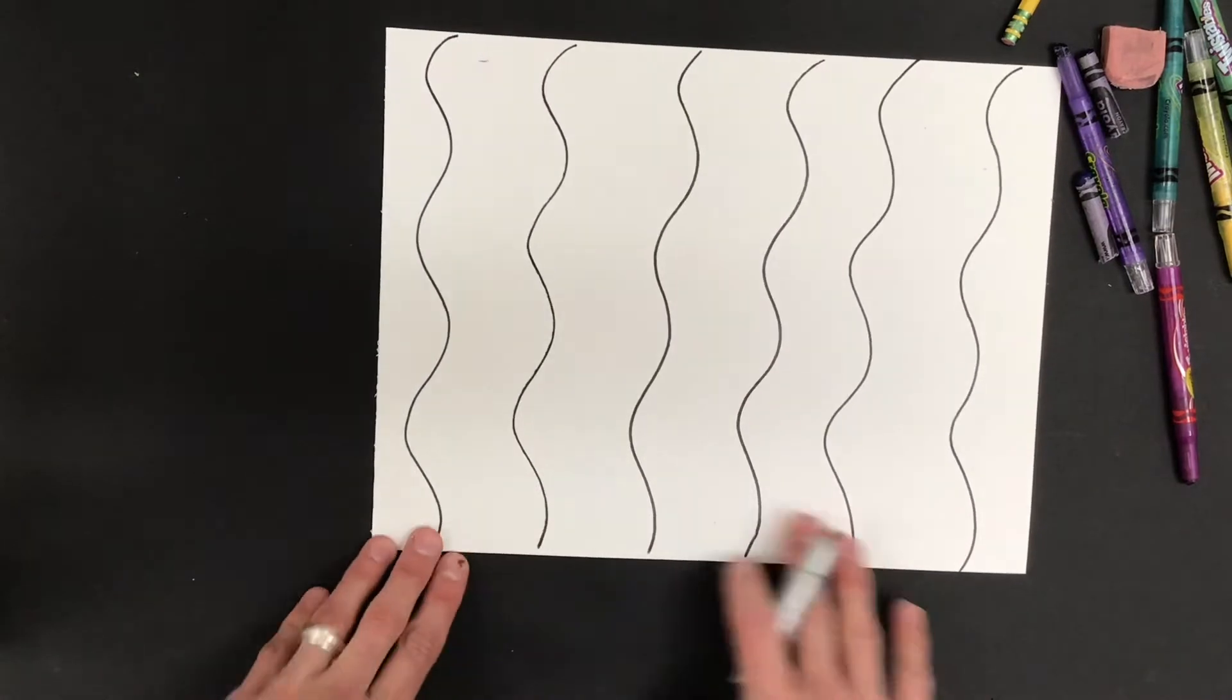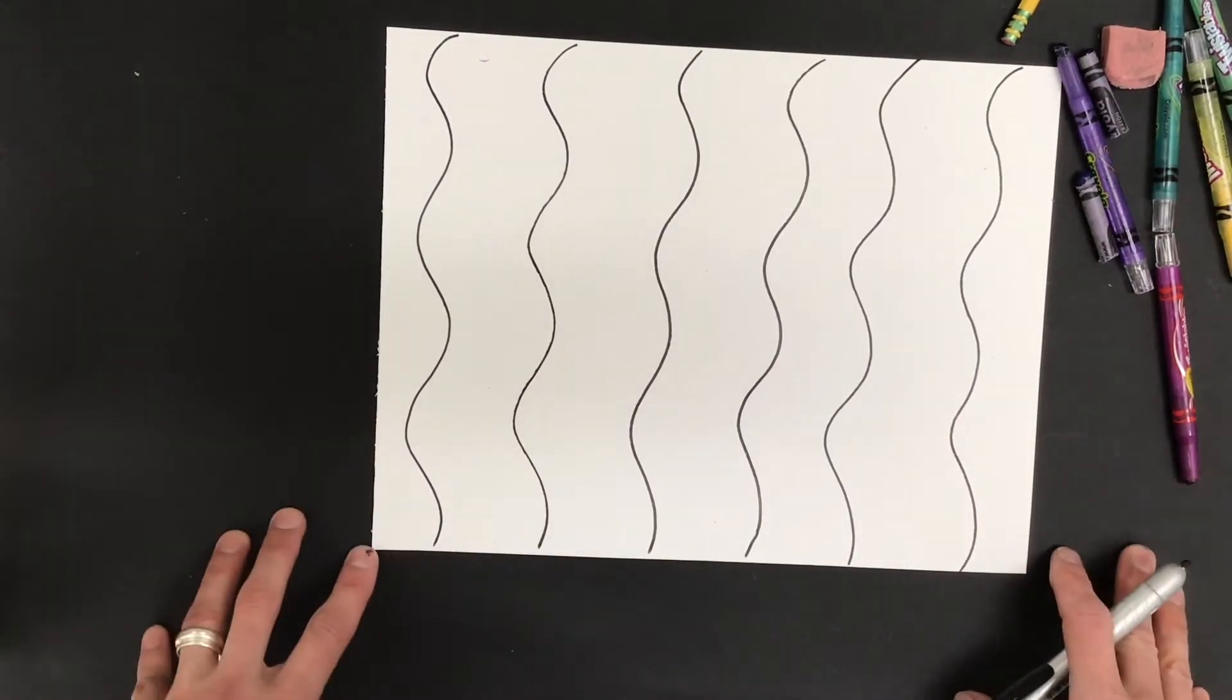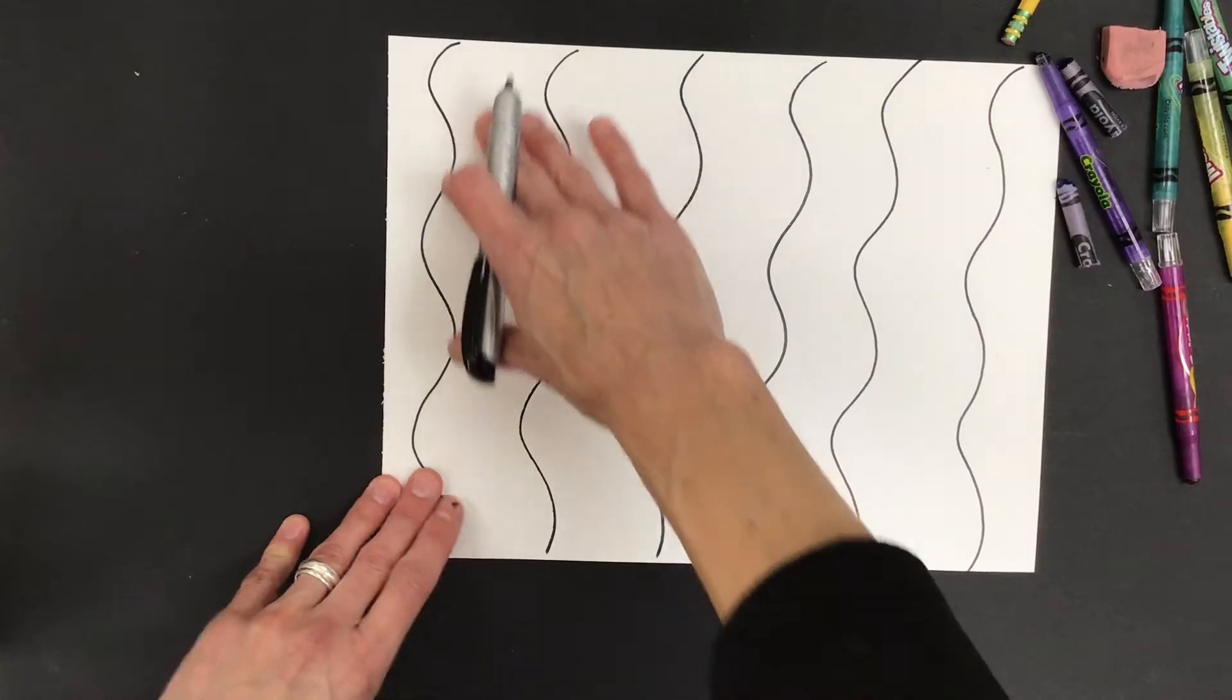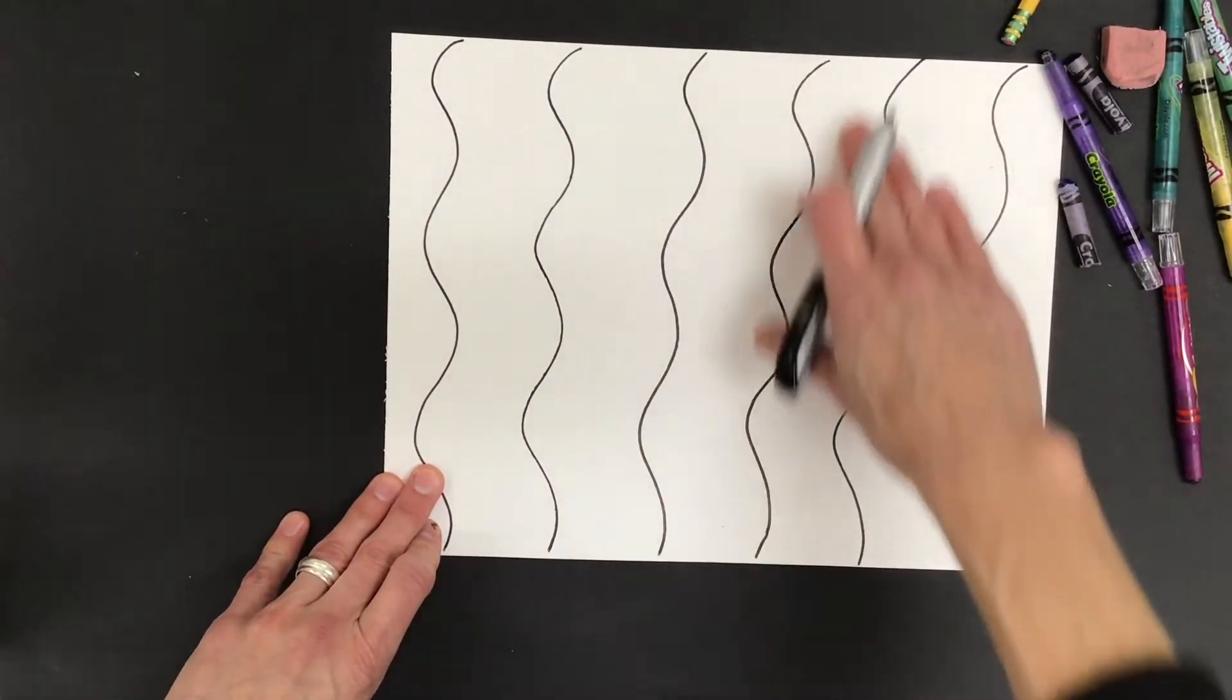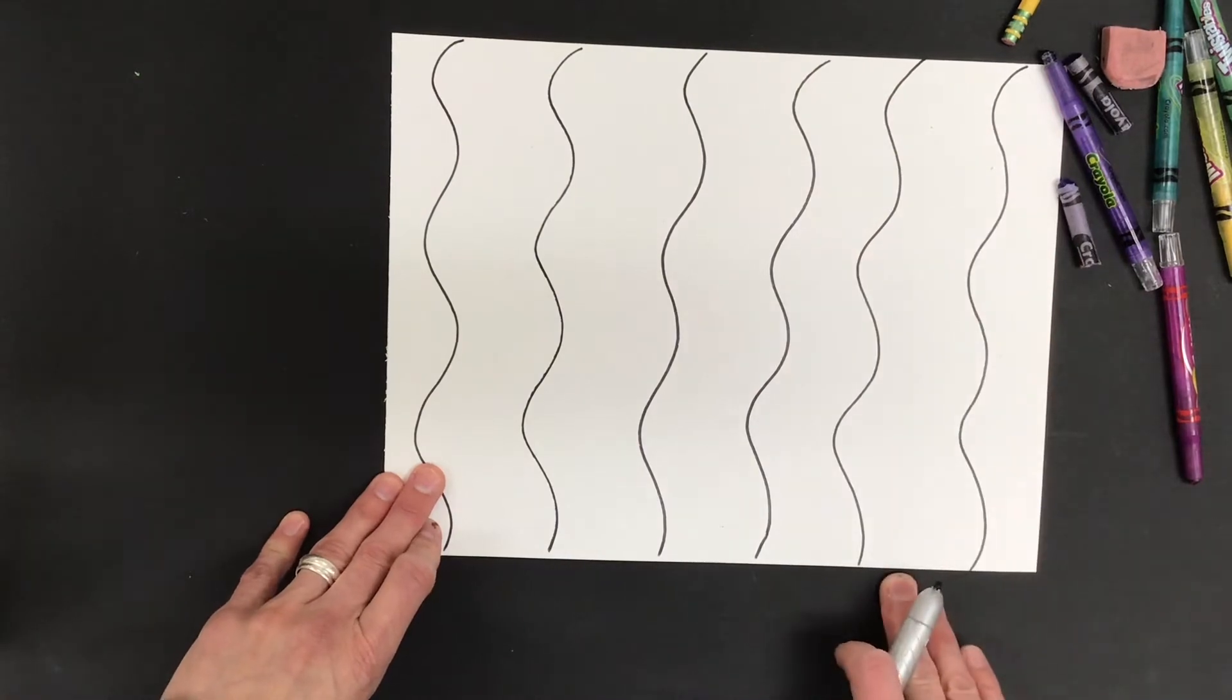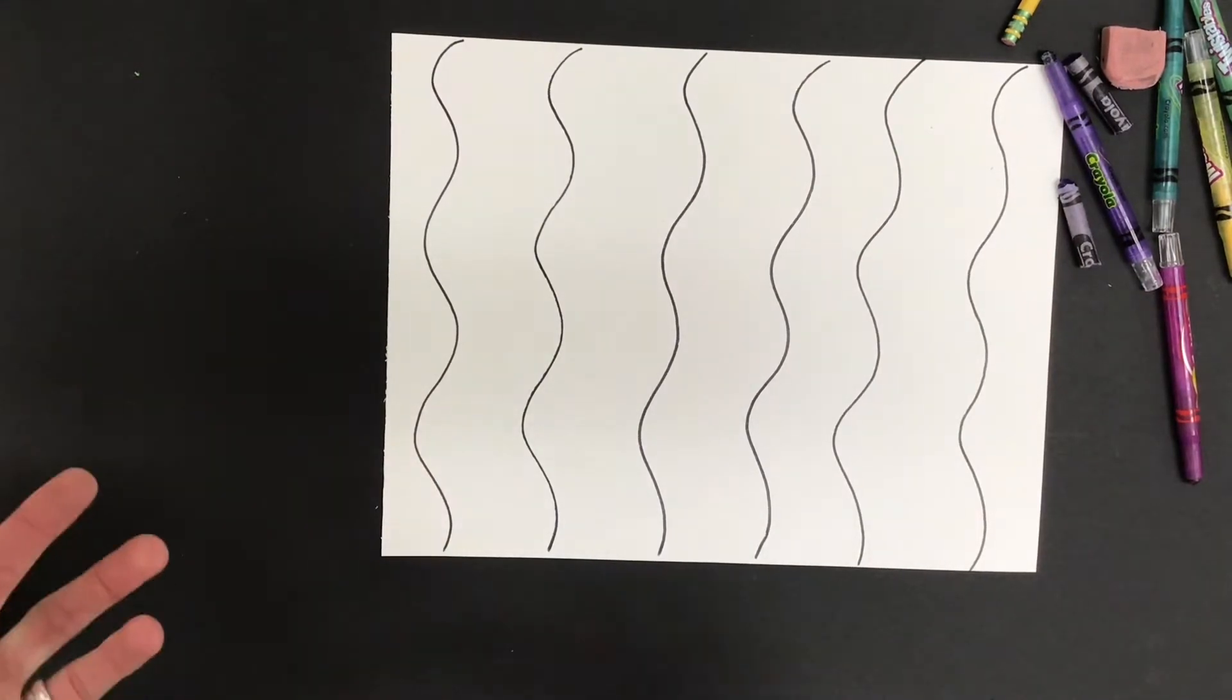Okay, so there's my repeated pattern. Okay, it looks fine but it could look a lot better. What I'm going to do now is maybe think of another line that I can put inside of these or next to those lines that I already drew to make it a little bit more interesting.